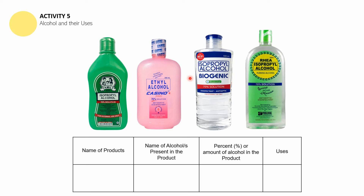Remember that 70% solution refers to 70 parts alcohol per 30 parts of water. I'll give you time to finish this table — you can write this on your activity paper or on your notebooks. You can pause this video if you need more time.